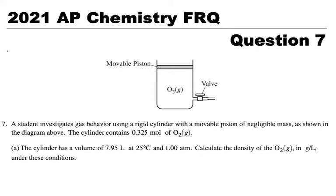We're going to look at the 2021 AP Chemistry FRQ question number 7. Here we have a picture. We can see a little container that has oxygen gas and a movable piston and a valve.